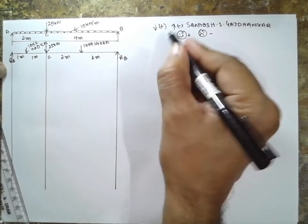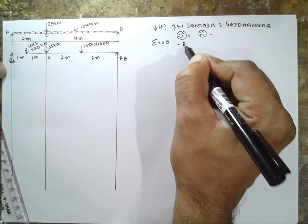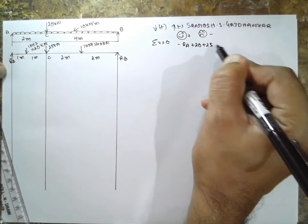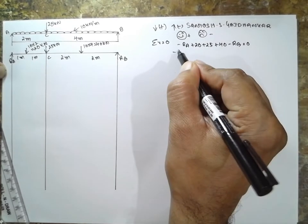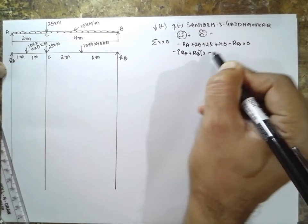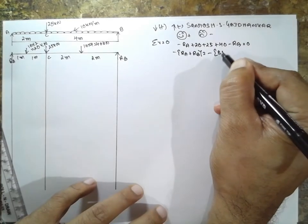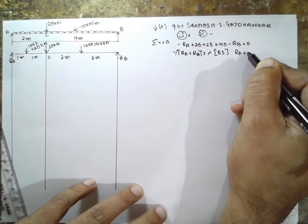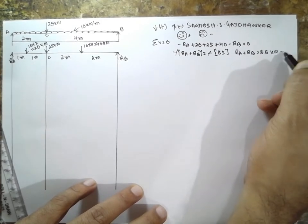Now we have to find out the vertical force is equal to 0, minus RA plus 20 plus 25 plus 40 minus RB is equal to 0. Take minus outside, RA plus RB is equal to 85 kilonewton, equation 1.